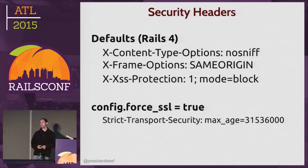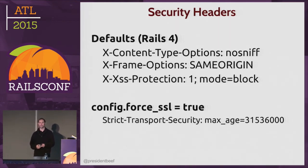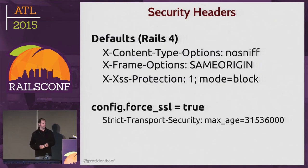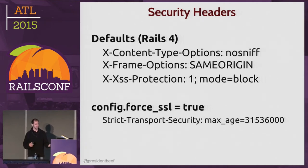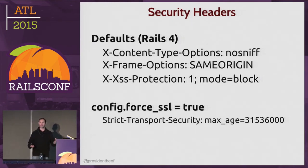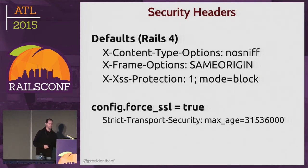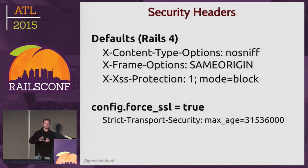Rails gives you security headers: X-Content-Type-Options set to nosniff so Internet Explorer doesn't try to guess your content type, which always ends badly. X-Frame-Options set to SAMEORIGIN so no one can iframe you and perform clickjacking attacks. X-XSS-Protection turned on and set to block. If you set force_ssl to true, you get HSTS headers, which tell the browser to never use a plain HTTP connection — always use SSL, even if you click a link that isn't SSL.